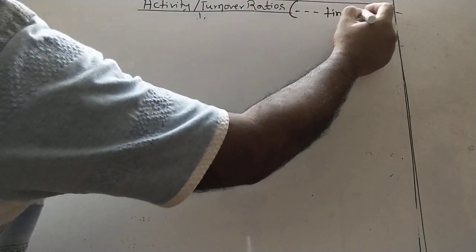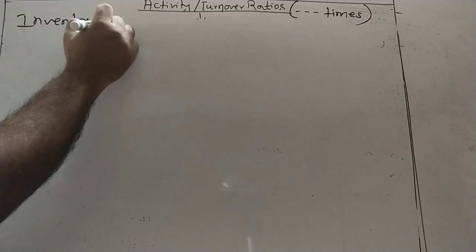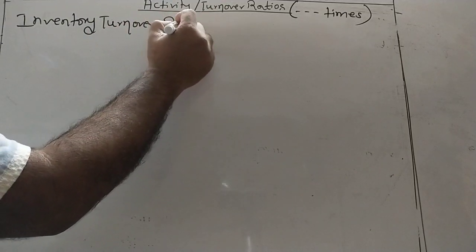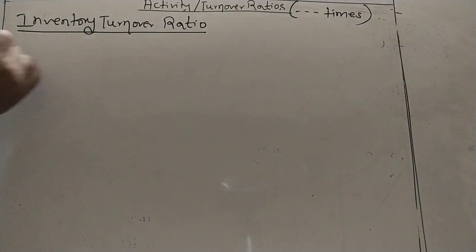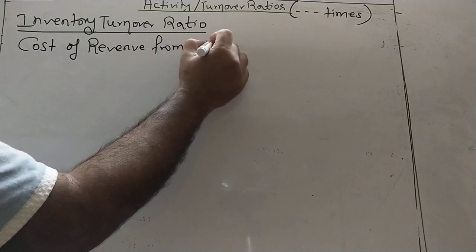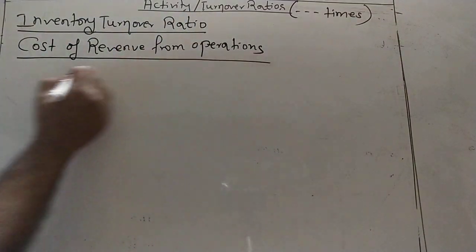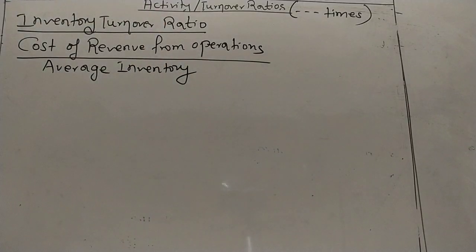Before I start, note that the answer for activity or turnover ratios is always expressed in times. The first ratio is inventory turnover ratio. Whenever sums are asked on ratios, your first duty is to write down the formula. The formula is: Cost of Revenue from Operations divided by Average Inventory. That is a very simple formula.